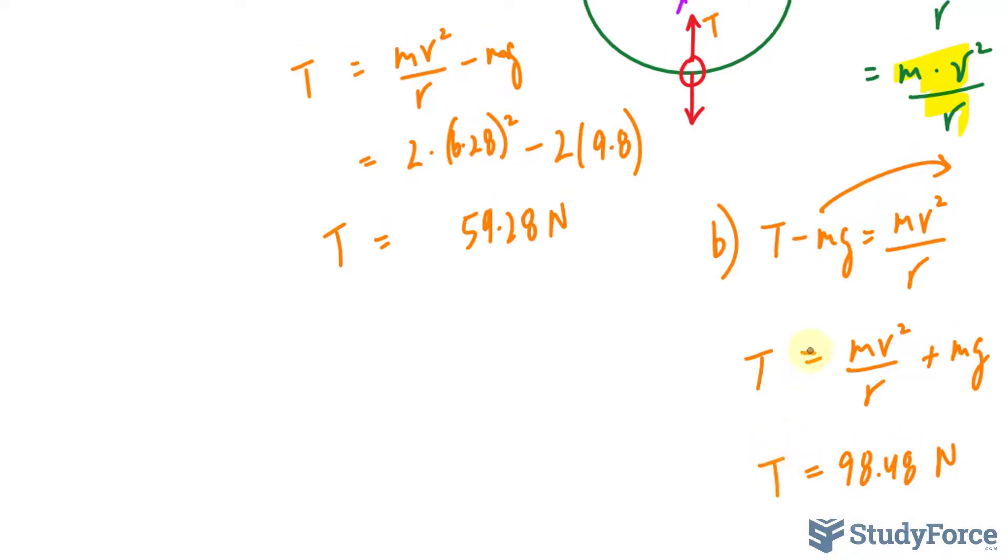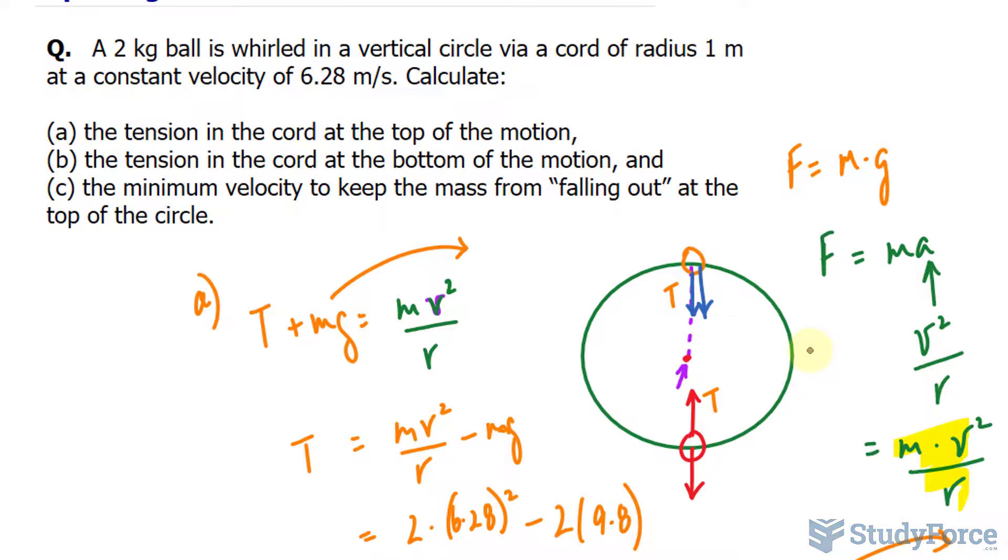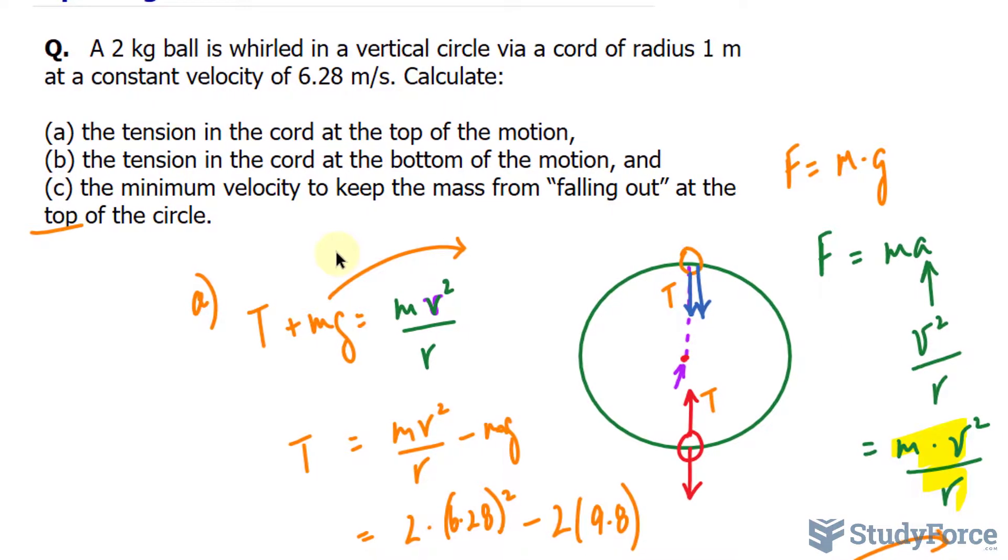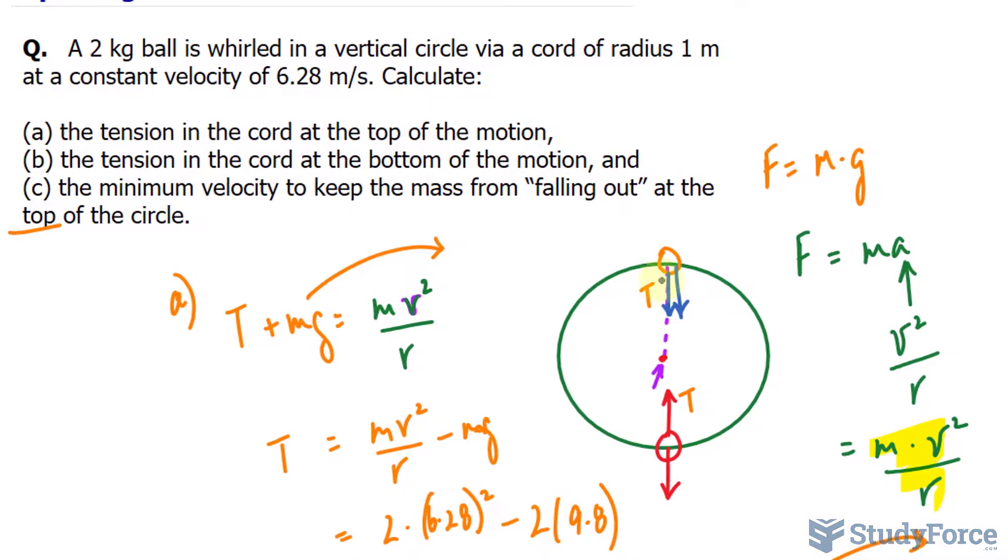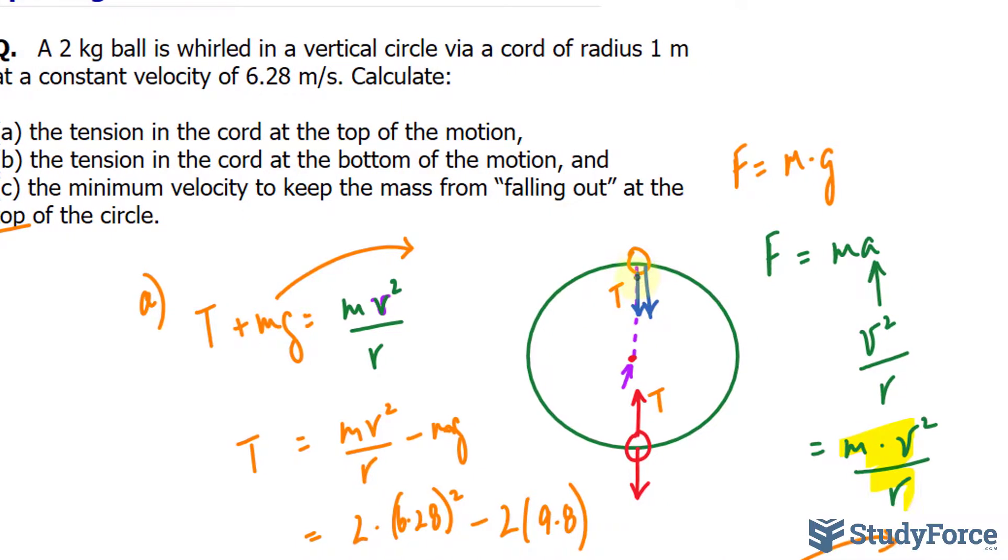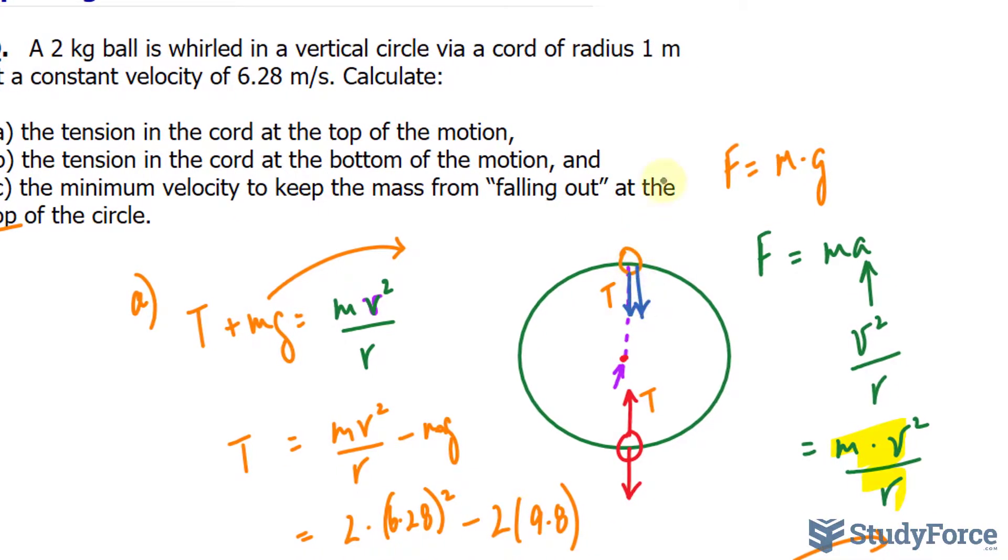Lastly for part C, we need to find the minimum velocity to prevent the mass from falling out of the circle. The only way this could happen is if at the top, the force due to gravity was bigger than the centripetal force.